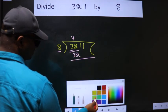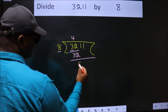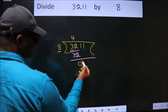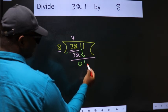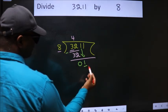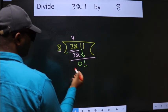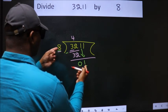Now we should subtract. We get 0. After this, bring down the beside number. So, 1 down. Here we have 1. Here 8. 1 is smaller than 8.